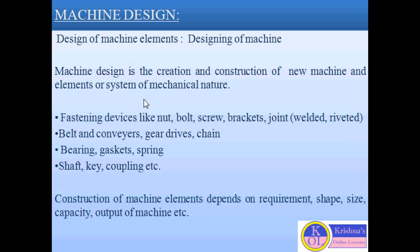These machines or machine elements can be fastening devices like different types of nuts, bolts, screws, brackets, and different types of joints like welded joints, riveted joints, etc. These fastening devices are basically used for joining two parts, and with the help of machine design, we can manufacture these machine elements as per the requirement — size, shape, load-bearing capacity, etc.